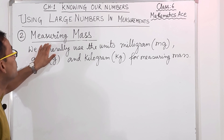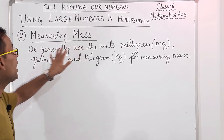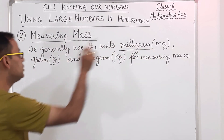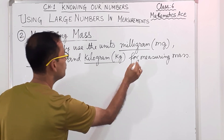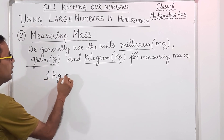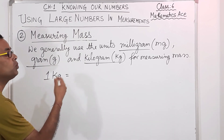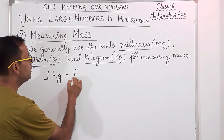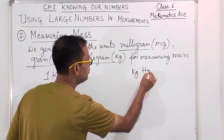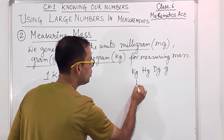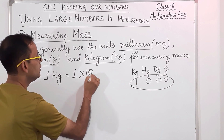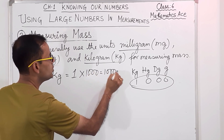Now we are going to understand measuring mass using large numbers. We generally use milligram (mg), gram (g), and kilogram (kg). So if I take 1 kg — 1 kilogram is how many grams? Because the order is: kilogram, hectogram, decagram, then gram. So 1 multiplied by 1,000 — I get 1,000 gram.